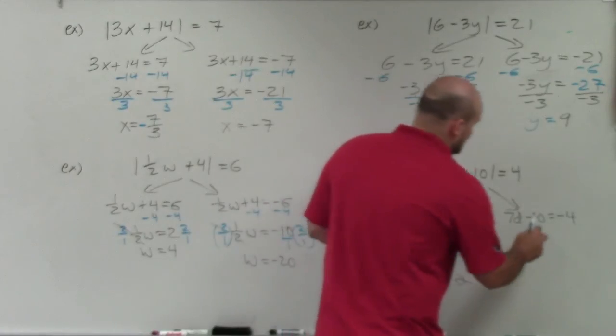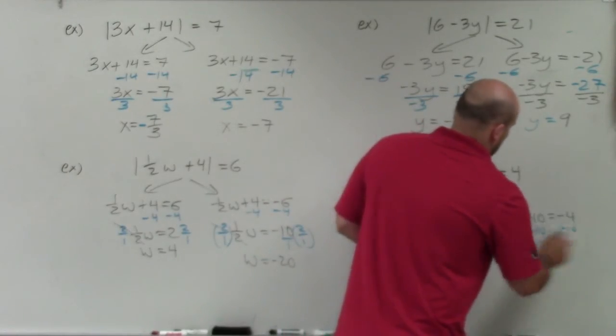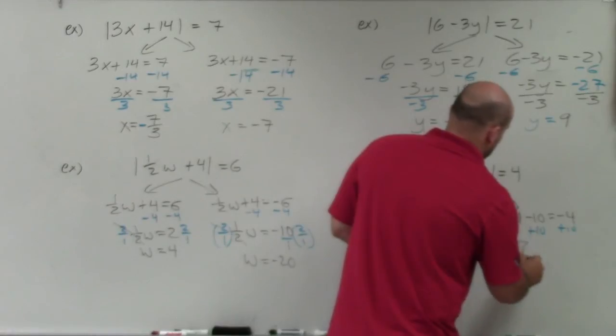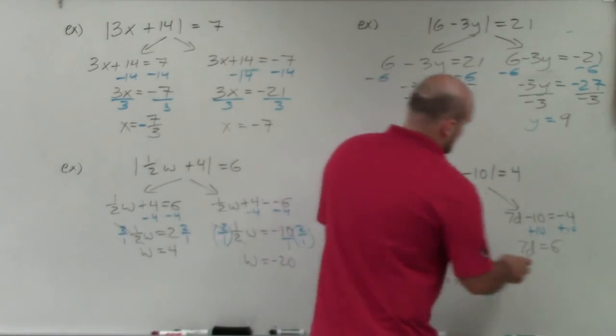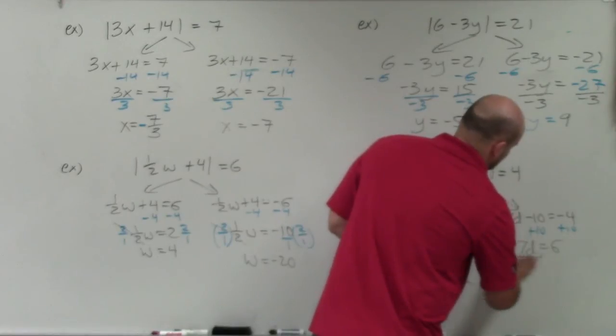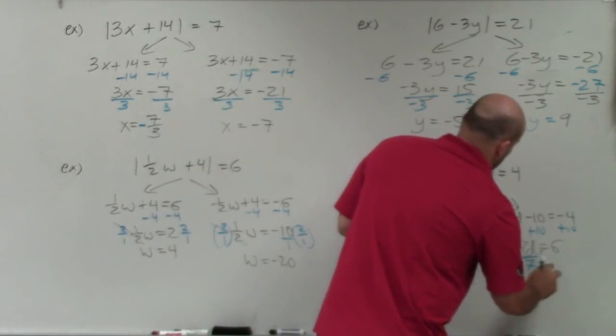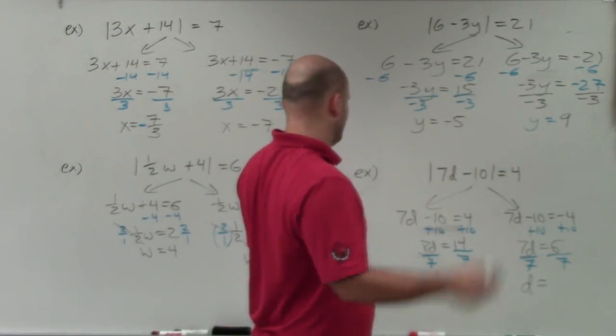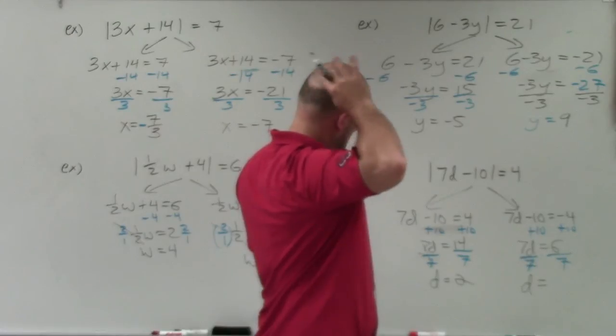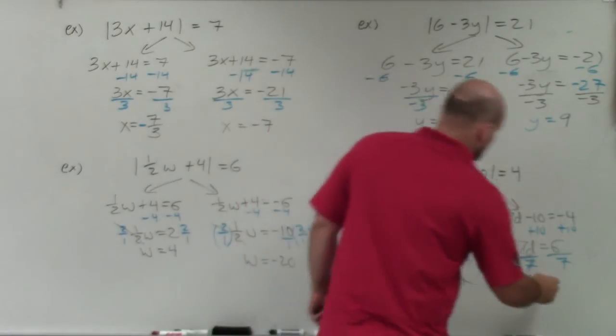Here, I add 10 to both sides. What I obtain is 7d equals positive 6. Divide by 7, divide by 7, d equals 6 sevenths.